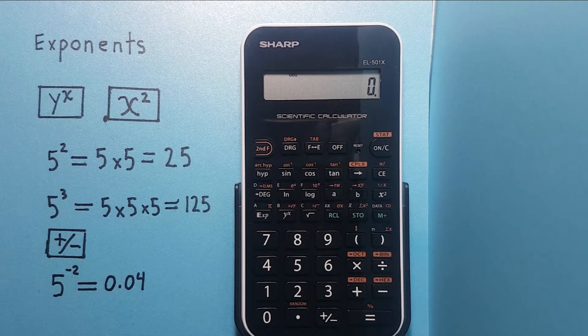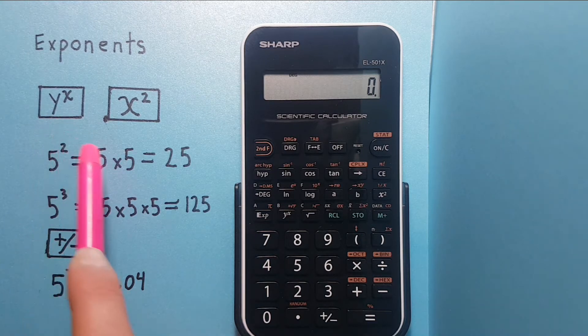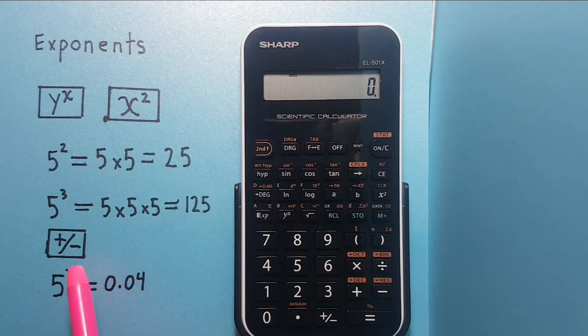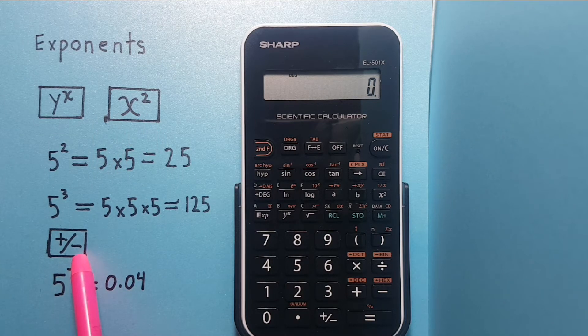To do this we will be using the keys y to the power of x and x squared, and we can also use the positive negative key.